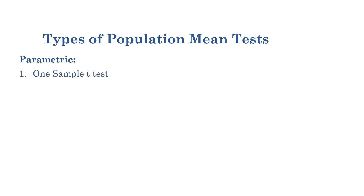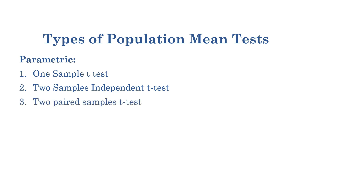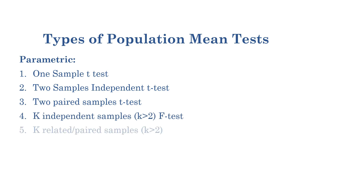The types of parametric tests for the population mean are: one sample t-test, two samples independent t-test, two paired samples t-test, key independent samples, and key related or paired samples.